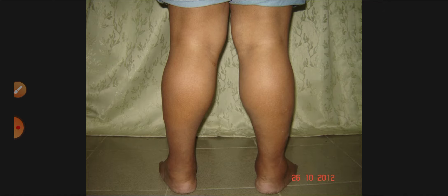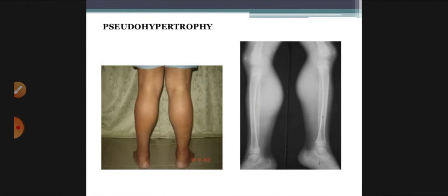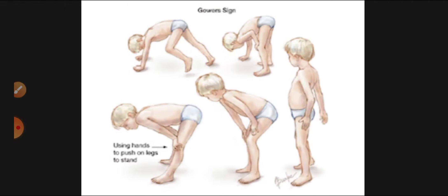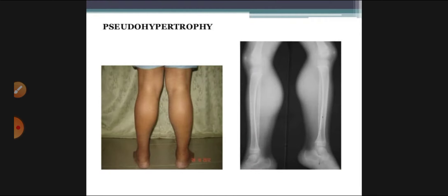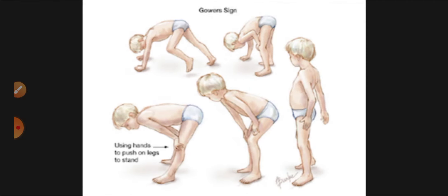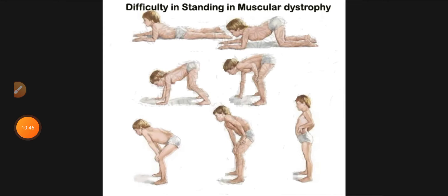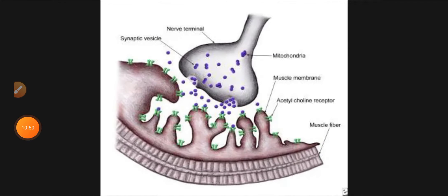When children start moving, their pseudohypertrophy becomes apparent — they don't have true muscle, it is just fat. They have difficulty standing and getting up. This is pseudohypertrophy where muscles have been replaced by adipose tissue, causing difficulty in standing in muscular dystrophy.